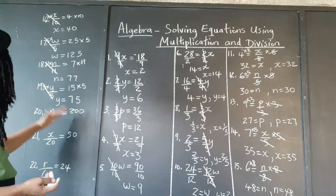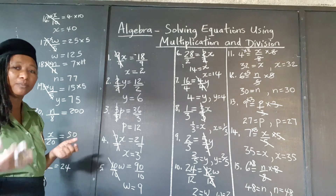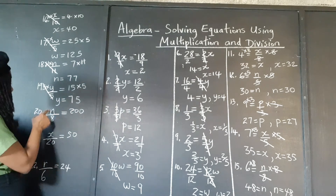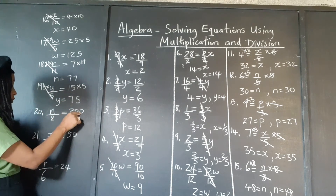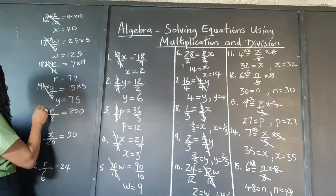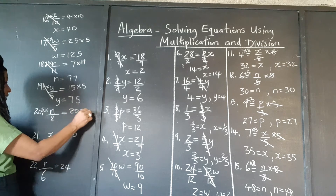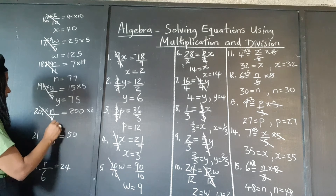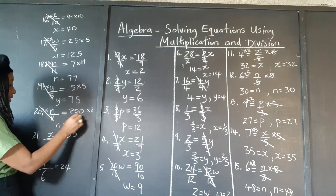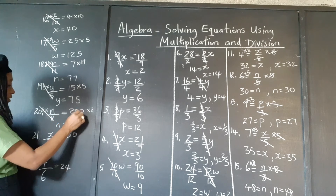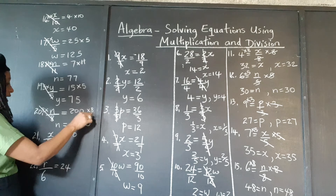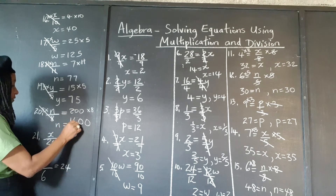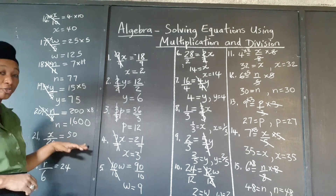Same principle here, just with some slightly bigger numbers. Which number, when you divide it by 8, gives 200? Multiply both sides by 8. These 8s cancel out. 200 times 8: 8 times 0 is 0, 8 times 0 is 0, 8 times 2 is 16. So the answer is 1,600.